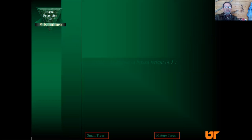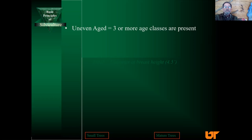An even-aged forest can be differentiated from an uneven-aged forest. An uneven-aged forest is a situation where we have three or more age classes all present in the forest. I'm using a graph to show this. On the x-axis is the acronym DBH — diameter at breast height. Foresters measure trees at four and a half feet above the ground. You notice the continuum from small diameter to large diameter trees. On the y-axis we have the number of stems. In an uneven-aged forest, you would expect a whole lot of small diameter trees descending all the way down to very few mature trees — it's a reversed J-shaped curve.